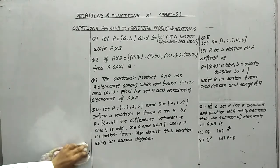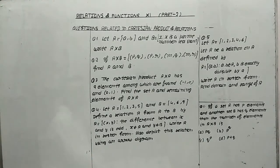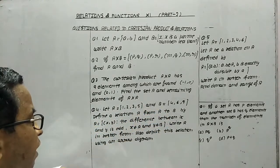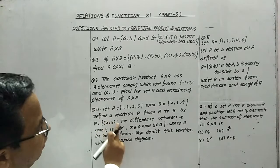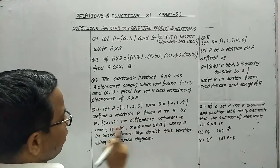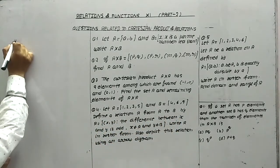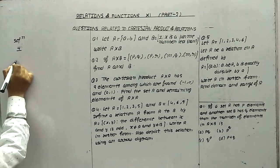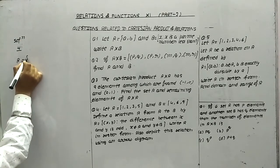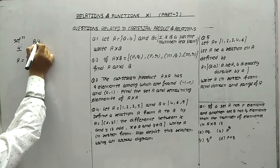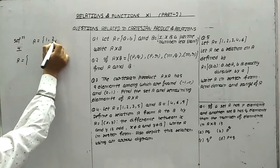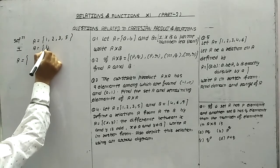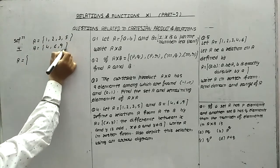Now let's start with question number 4. Let A = {1, 2, 3, 5} and B = {4, 6, 9}. Define a relation R such that the difference between x and y is odd. For this solution, we need the difference to be odd.